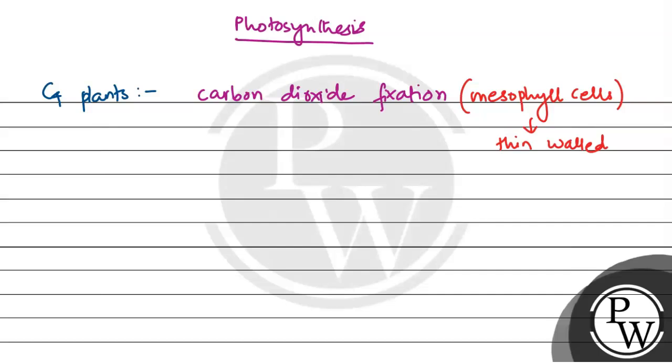After that, carbon dioxide fixation forms a 4-carbon compound. The 4-carbon compound which is 3-phosphoglyceric acid, 3-PGA, goes into bundle sheath cells. This is where the dark reaction takes place.